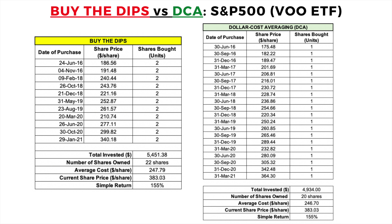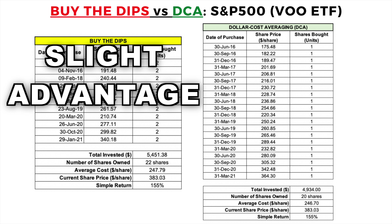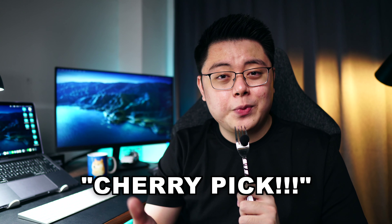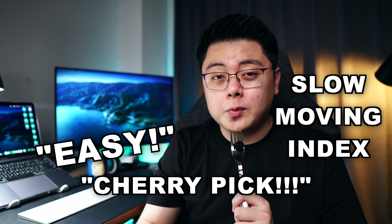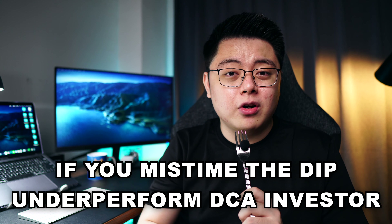Of course, the test wasn't perfect. Theoretically, buying the dips has a slightly better return due to dividends and lower brokerage fees incurred, but those are really small and negligible. I know there will be skeptics saying I cherry-picked an easy, slow-moving index — they are probably right. But I just want to show you that if you mistimed even one dip, you would most likely underperform against an investor who just dollar cost averaged and didn't bother to stare at the share price at all.